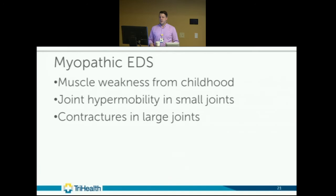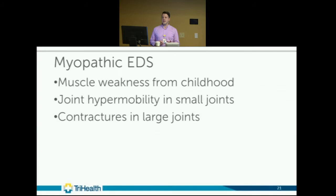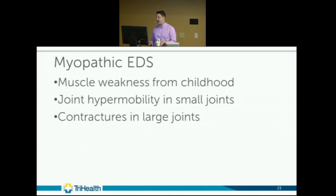Myopathic EDS features muscle weakness from childhood or infancy. Joint hypermobility is primarily in the small joints or more peripheral, with contractures in the large joints. Muscle weakness tends to improve with age, then some deterioration occurs in the fourth decade.